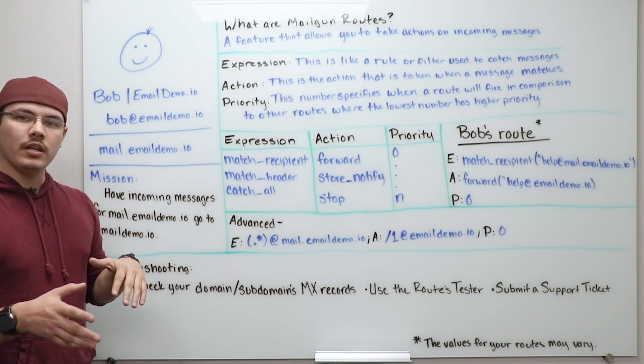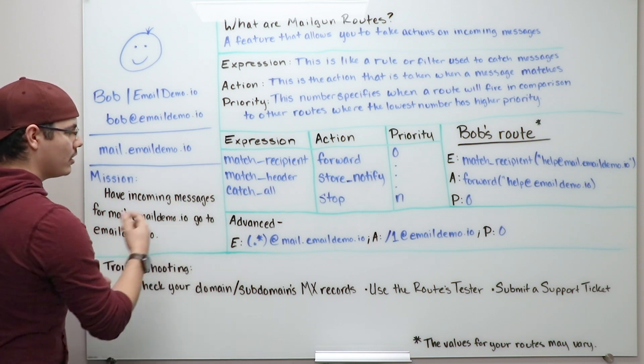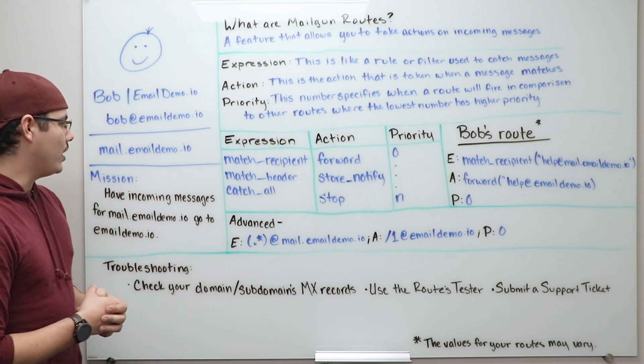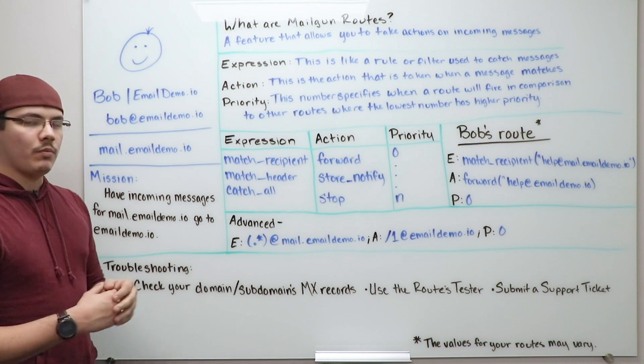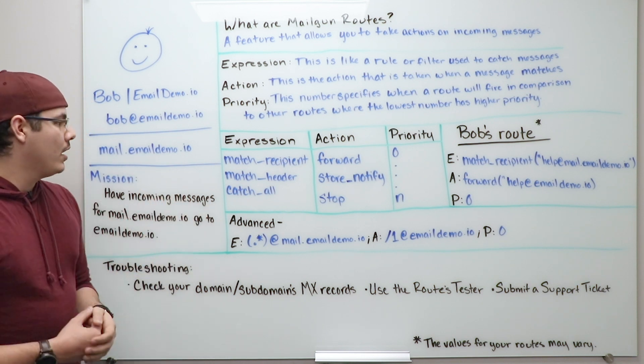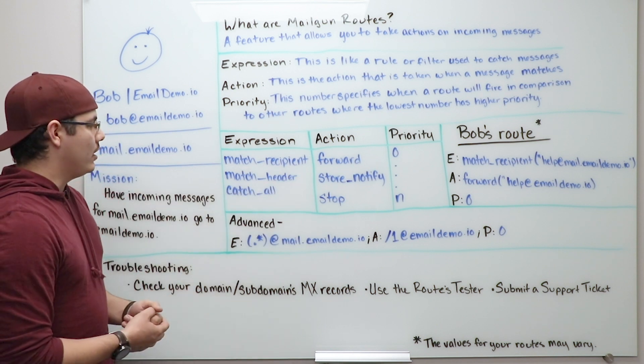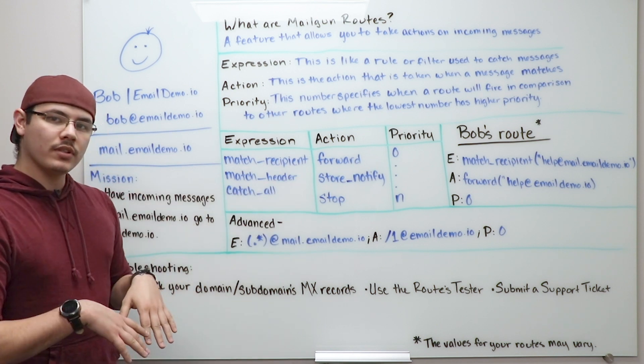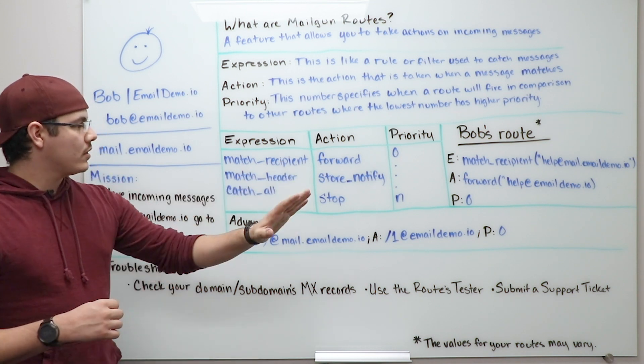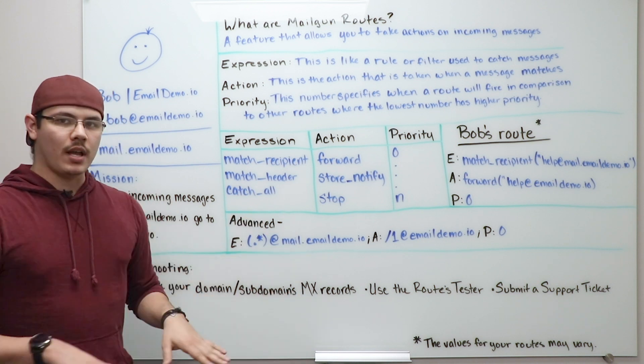You can also do some custom expressions as well, where you match recipients and match headers. Match recipient will match any kind of recipient that you have coming in. A match header will match a specific header within the incoming line. The store notify can notify an endpoint as well as store it on Mailgun servers for up to 72 hours. The forward can then post to an endpoint or forward on to another email. Stop just stops all actions.